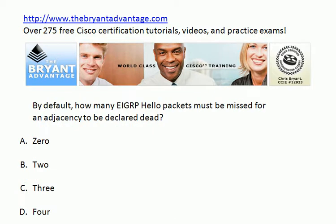Let's move to the next question. By default, how many EIGRP hello packets have to be missed in order for an adjacency to be declared dead?